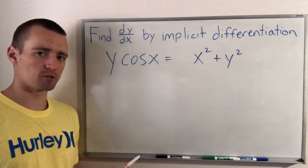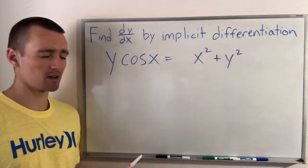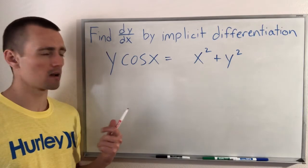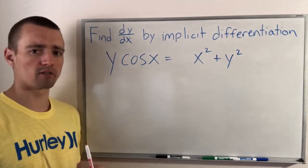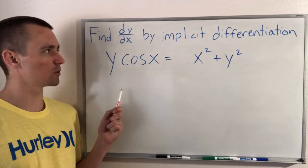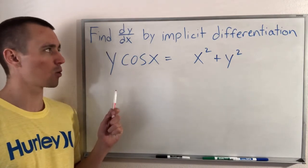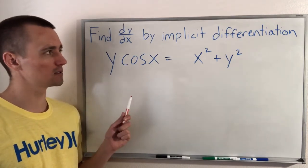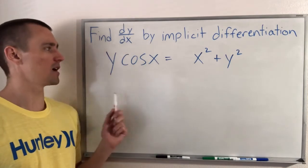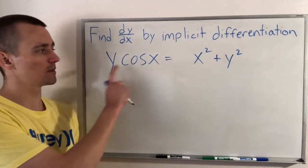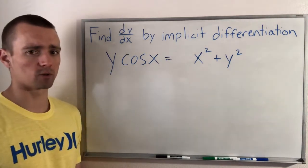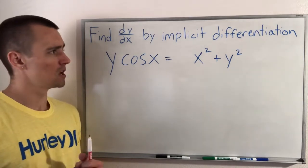Hey guys, Jake here, coming at you with some more math today. Here's what we're going to be doing today. We're going to be going over an implicit differentiation problem, specifically this one right here. What we're going to do is find dy/dx using implicit differentiation, given that y times cosine x equals x squared plus y squared. So let's get into it.